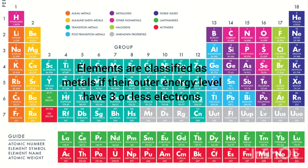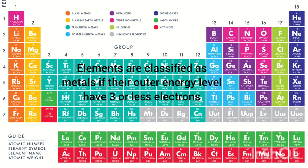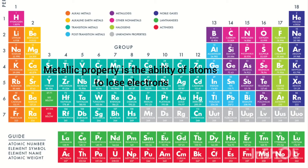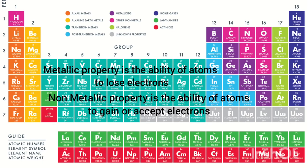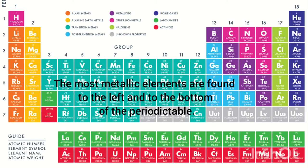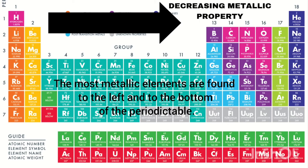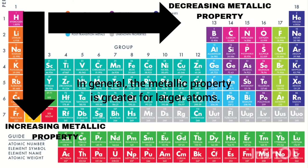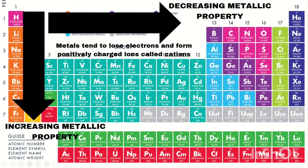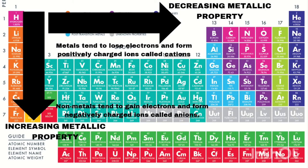Elements are classified as metals if their outer energy levels have 3 or fewer electrons, while those with 5 or more electrons are non-metals. Metallic property is the ability of atoms to lose electrons, while non-metallic property is the ability of atoms to gain or accept electrons. The most metallic elements are found to the left and to the bottom of the periodic table. From left to right, metallic property decreases; from top to bottom, it increases. Metals tend to lose electrons and form positively charged ions called cations, while non-metals tend to gain electrons and form negatively charged ions called anions.